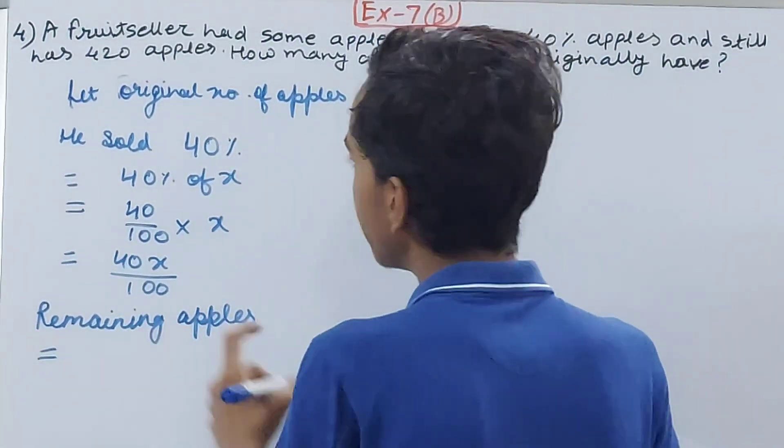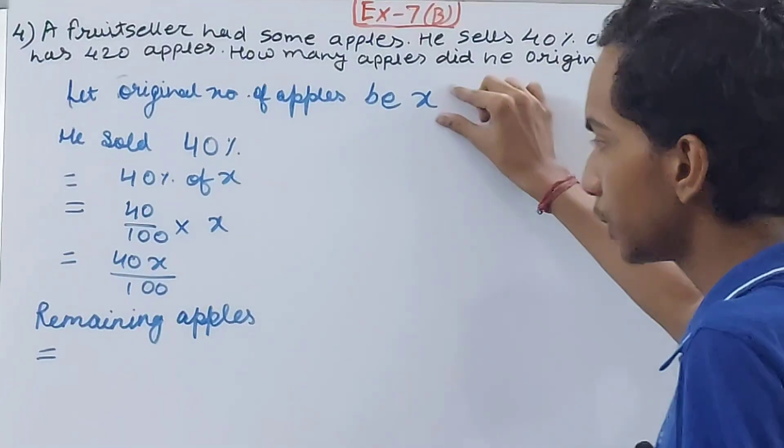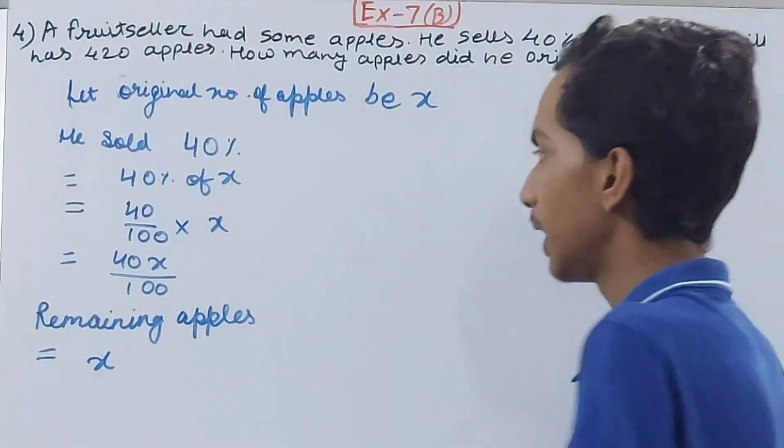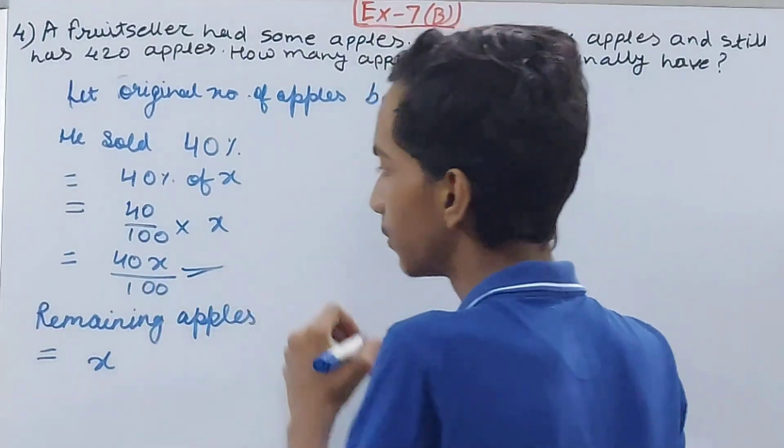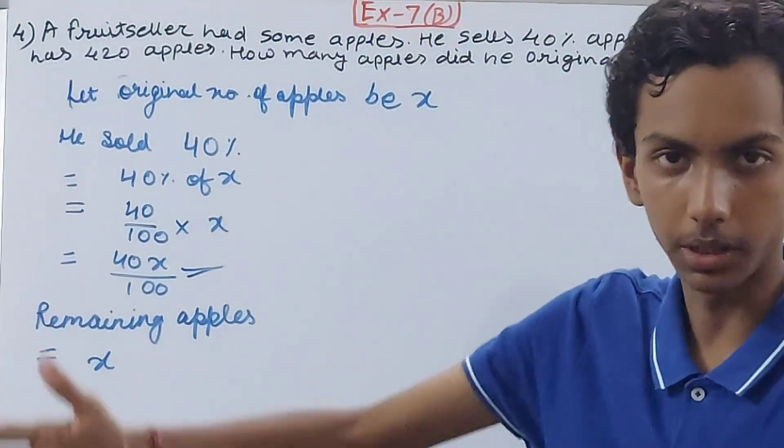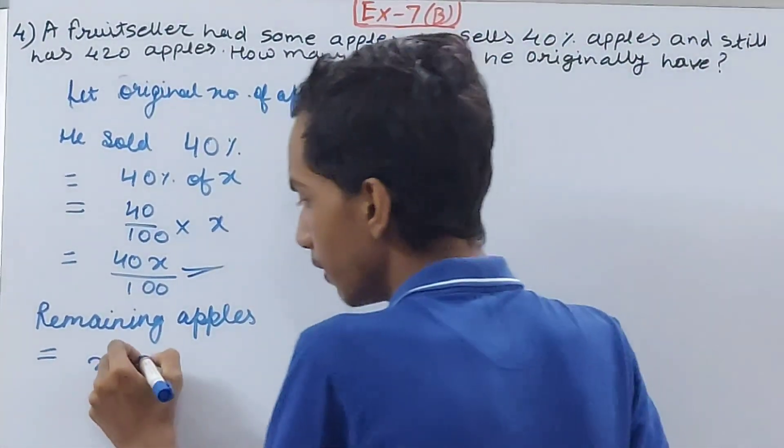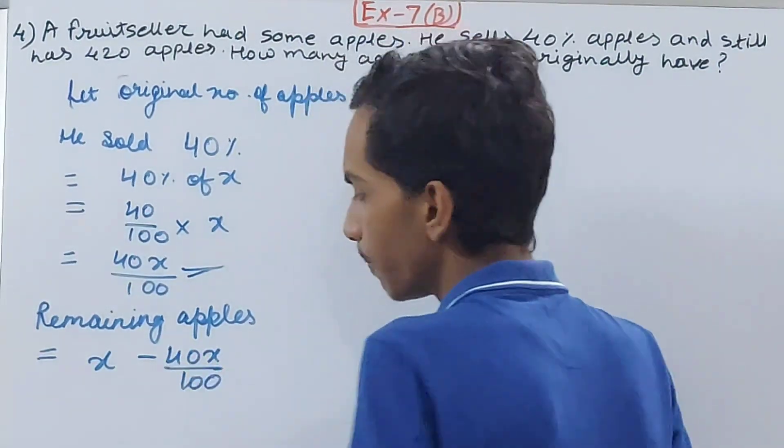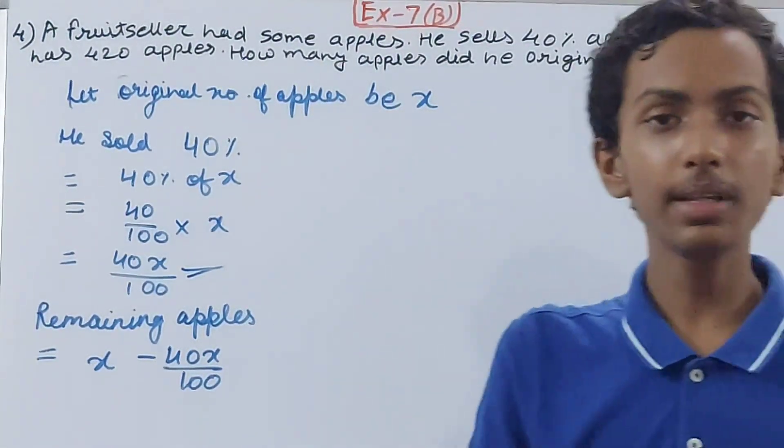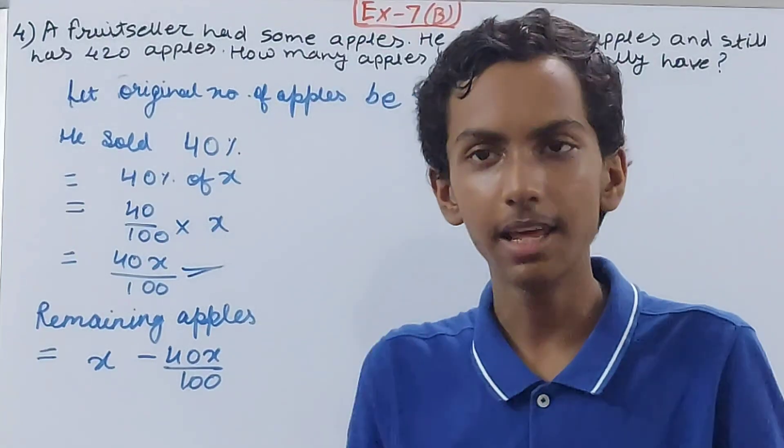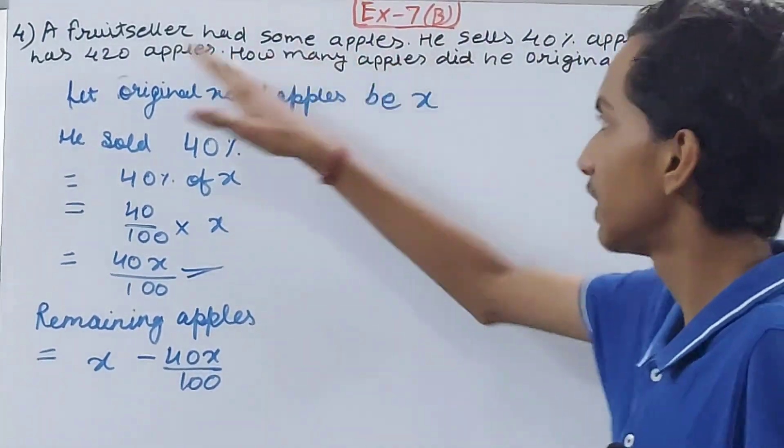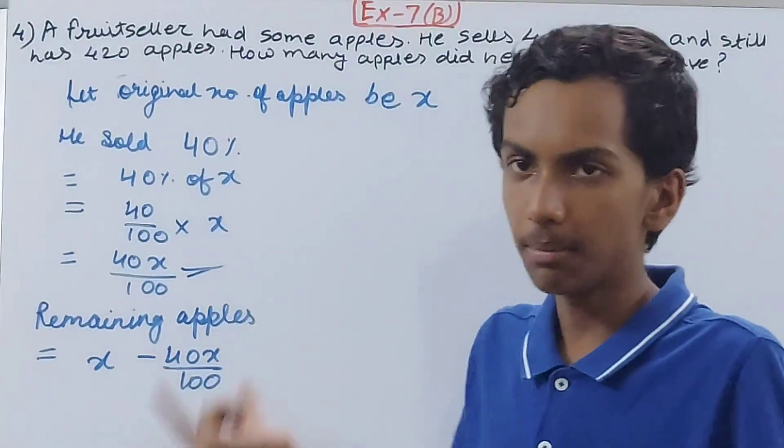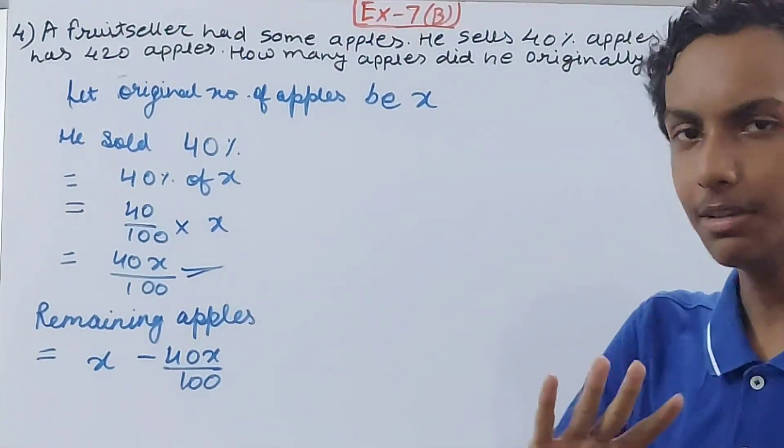That means what? See here, x was the number of apples he had in the starting, right? He has sold this many apples, 40x by 100 he has sold. So what we will write: minus 40x upon 100. You will subtract that, then you will get the number of apples that is left. I know that it is given here 420, but first we will get this in the number or in the value of x.